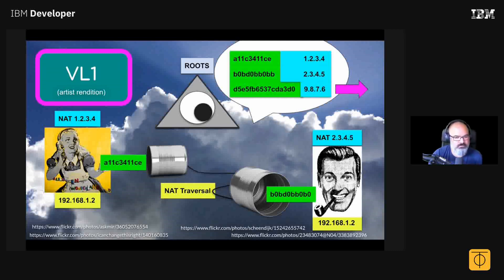If you look at the addresses here, ALL1C34 — that's a 40-bit address. MAC addresses are 48 bits long, so we can actually encode the ZeroTier node ID into them.